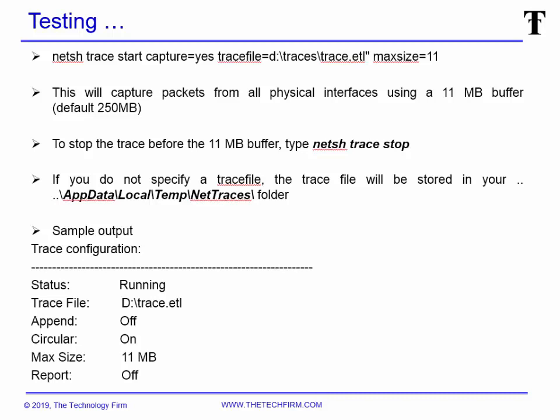So the first command is netsh trace start — capture equals yes, meaning you're starting a capture — and trace file is obviously where you want to put your trace file. At the end I put maxsize 11, and the reason is that the default buffer size is 250 megabytes and I didn't want that. So it'll capture 11 megabytes and then eventually stop, which may be what you want. You can also have circular buffers and let the thing run on, but again those are all options you can look into.